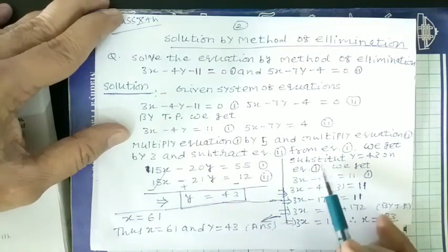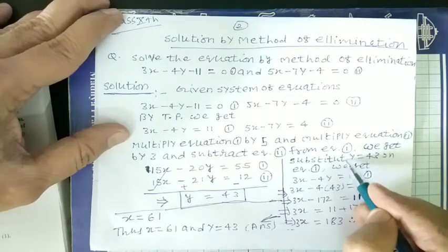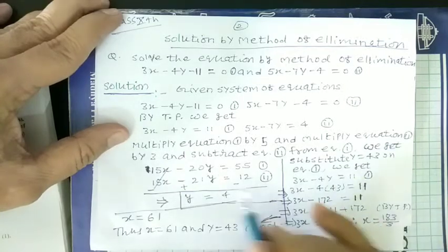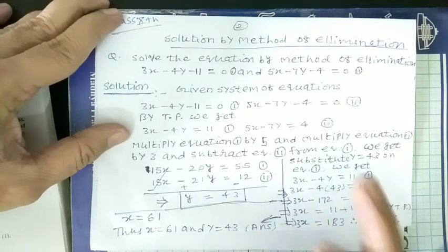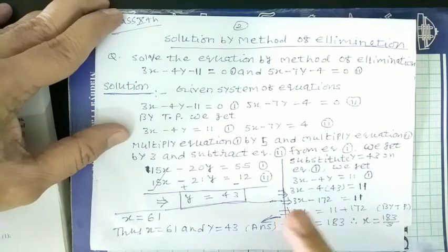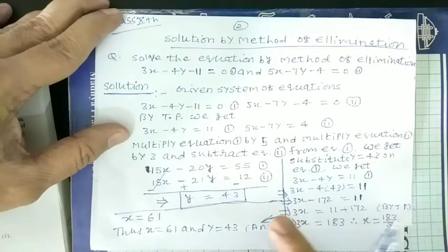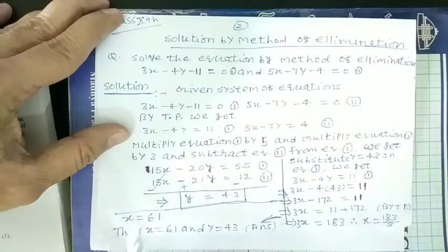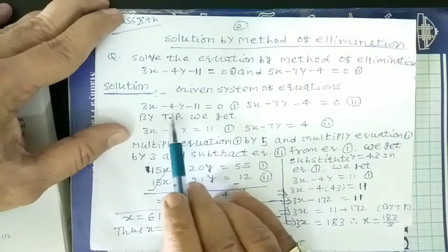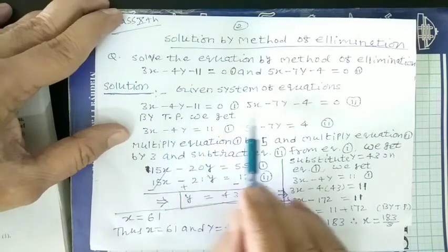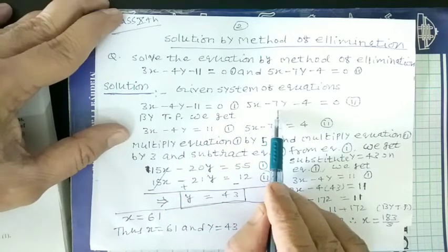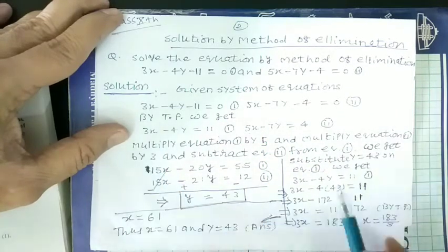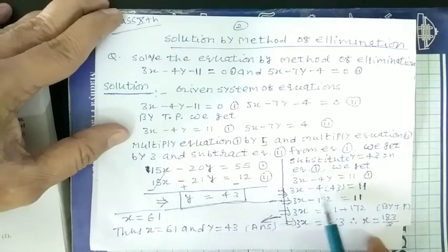Now, substitute y is equal to 43 in equation first. We get equation first, but take those original equations. Don't take those equations which we get after multiplication. We get the original equations which are given in the question. Equation first, the coefficients of variables are smaller than the equation second. Now, if we put y is equal to 43 in equation first, what we get?